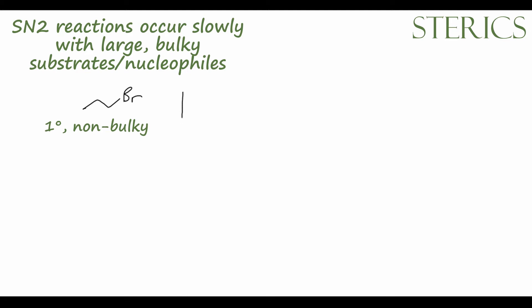Whereas something like tert-butyl bromide with this very bulky tert-butyl group is a tertiary haloalkane and is very bulky, so it would undergo SN2 reactions quite slowly, if at all.